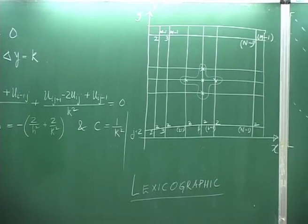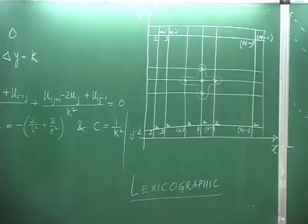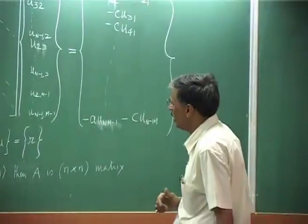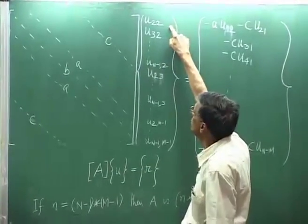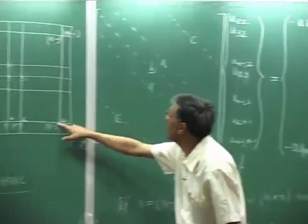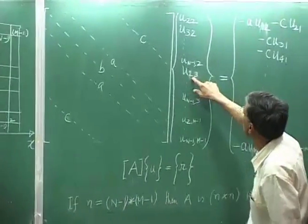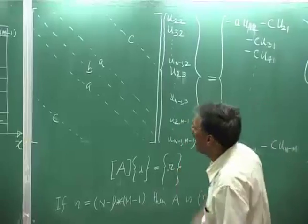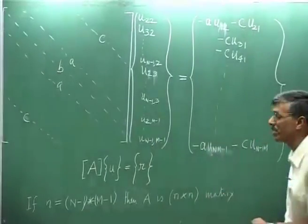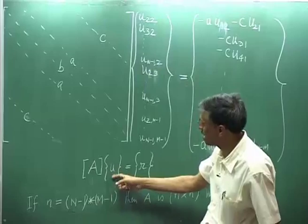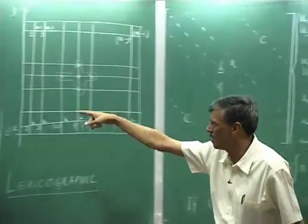Having done that, you write down this equation for each one of those unknown points, and that gives you a set of coupled equations. Please note the sequence: u₂₂, u₃₂, all the way up to u_{N-1,2}. Then you go over to the next line: u₂₃, u₃₃, all the way up to u_{N-1,3}, and finally the last line from u_{2,M-1} all the way up to u_{N-1,M-1}. This is your unknown column vector u, and these are the coefficients appearing in the difference equations.